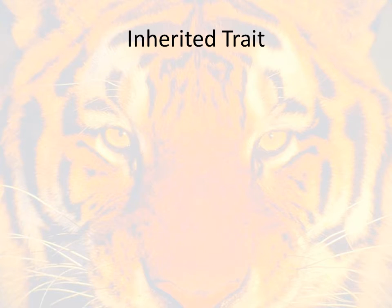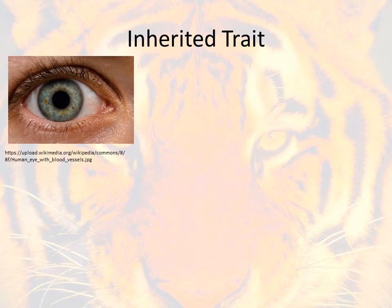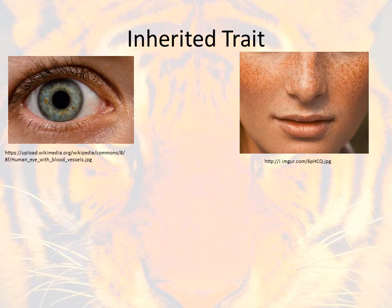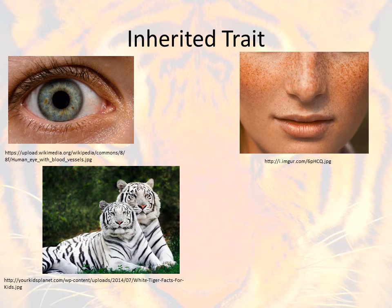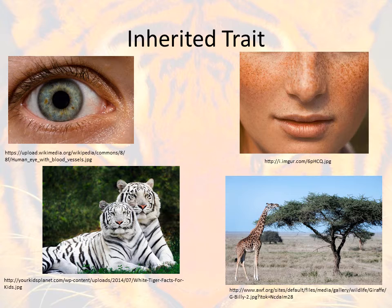As we begin, let's start with the basics and understand what an inherited trait is. An inherited trait could be something as simple as eye color — something you got from your parents. It could be the complexity of your skin in terms of freckles or not. It could even be the color of coat or the stripes on a tiger. These are all inherited traits. Even something as simple as the long neck of a giraffe is an inherited trait unique to that organism that came from their parents.